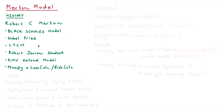Very interestingly, Merton has a student called Robert Jarrow, who we will be talking about in another video, who came up with the Jarrow-Turnbull model, which uses Markov jump processes to determine the probability of default.